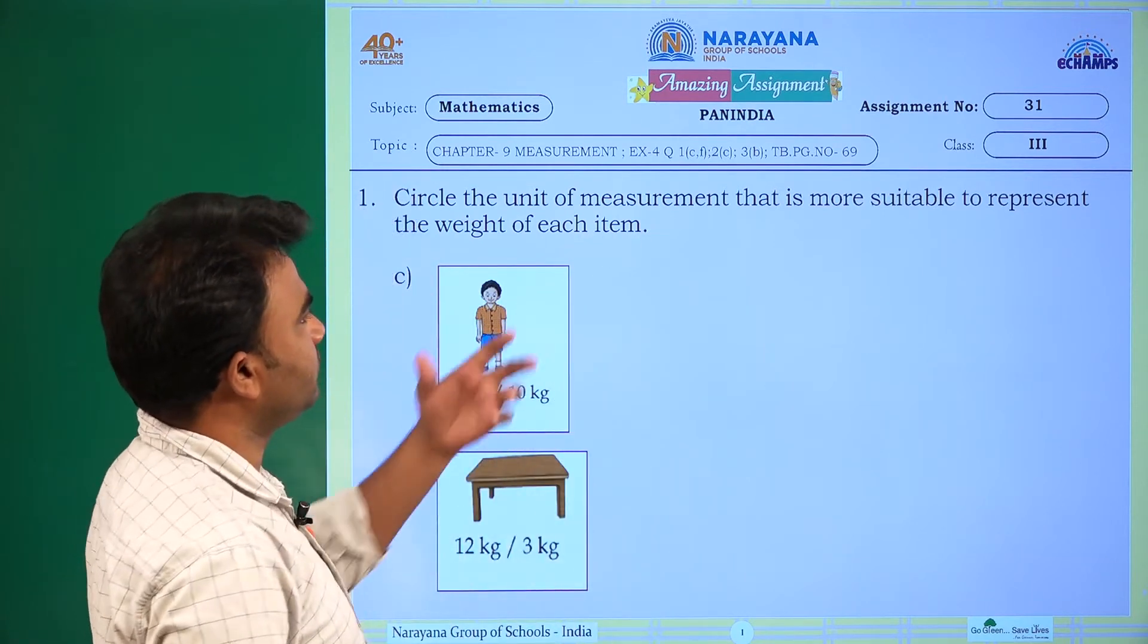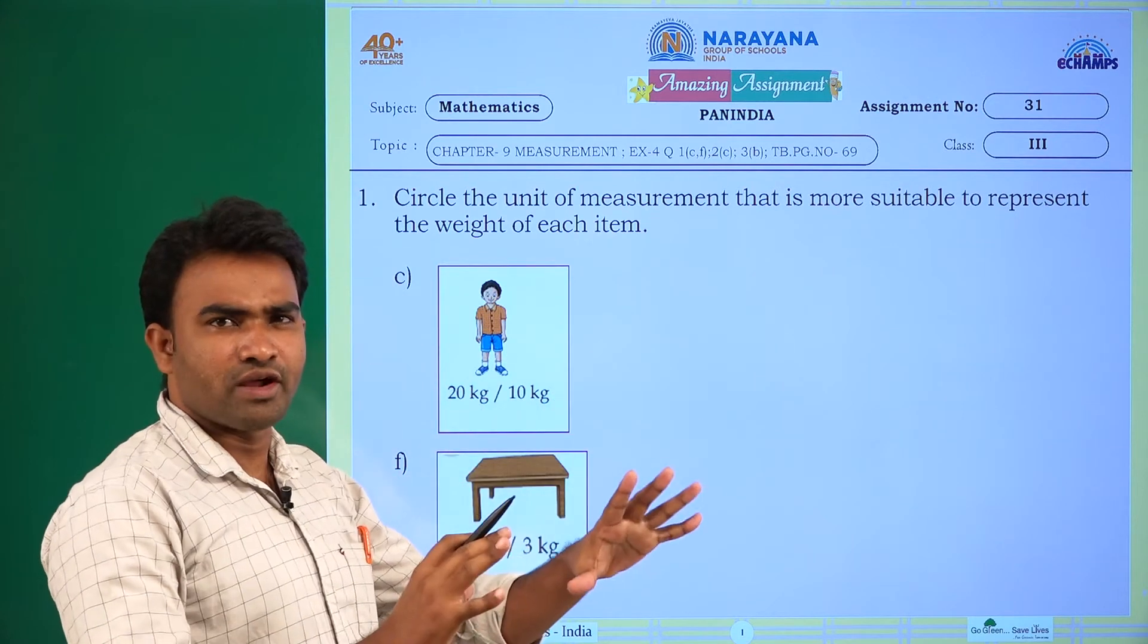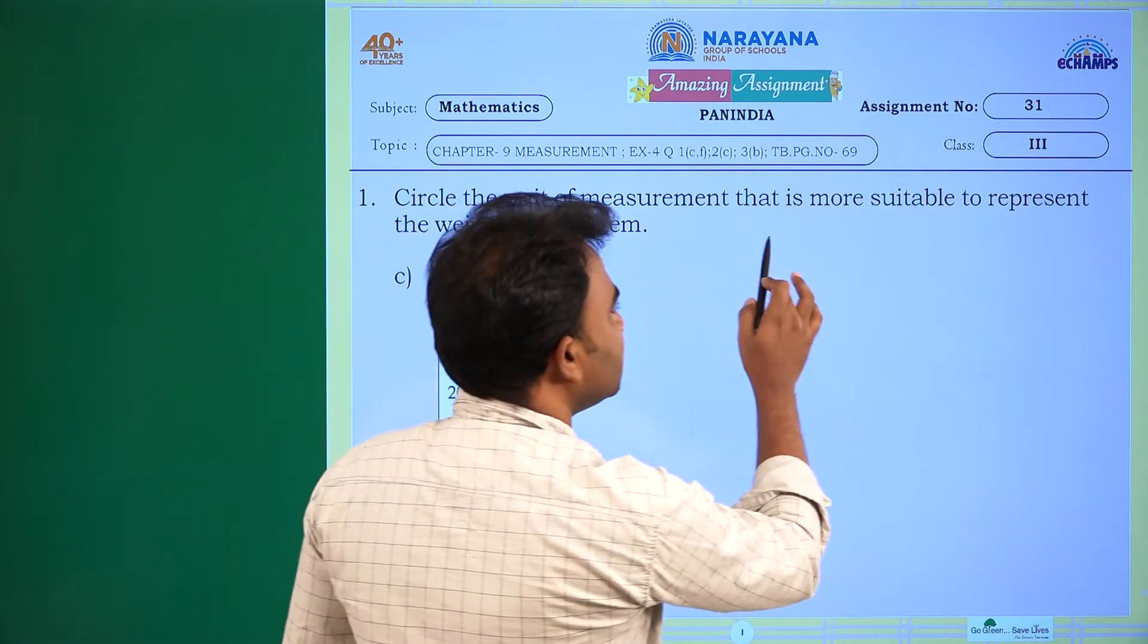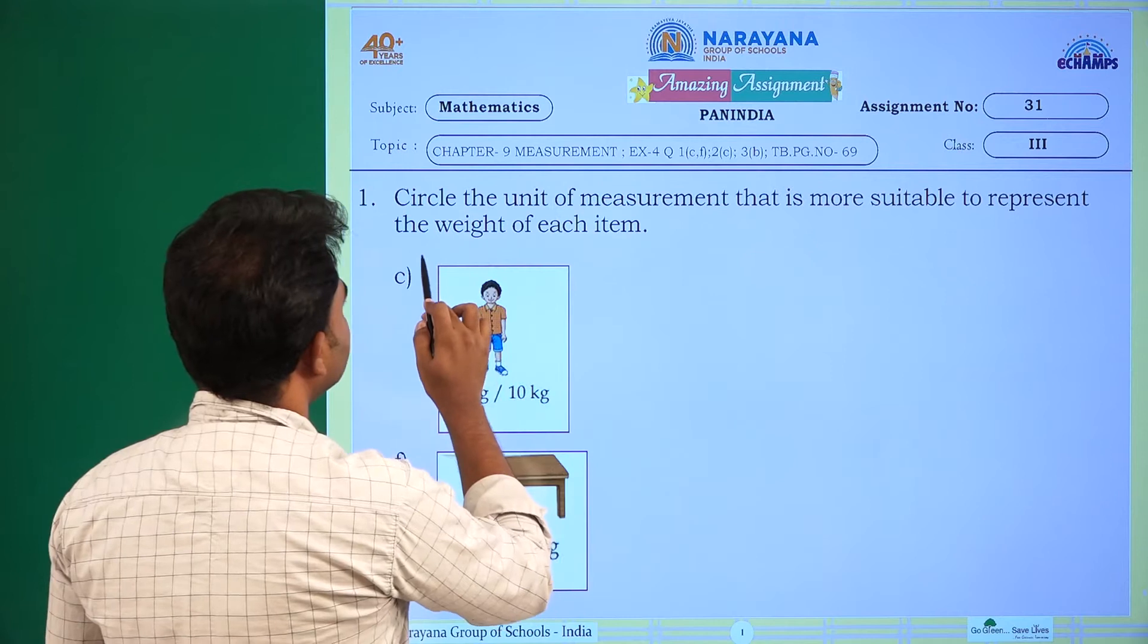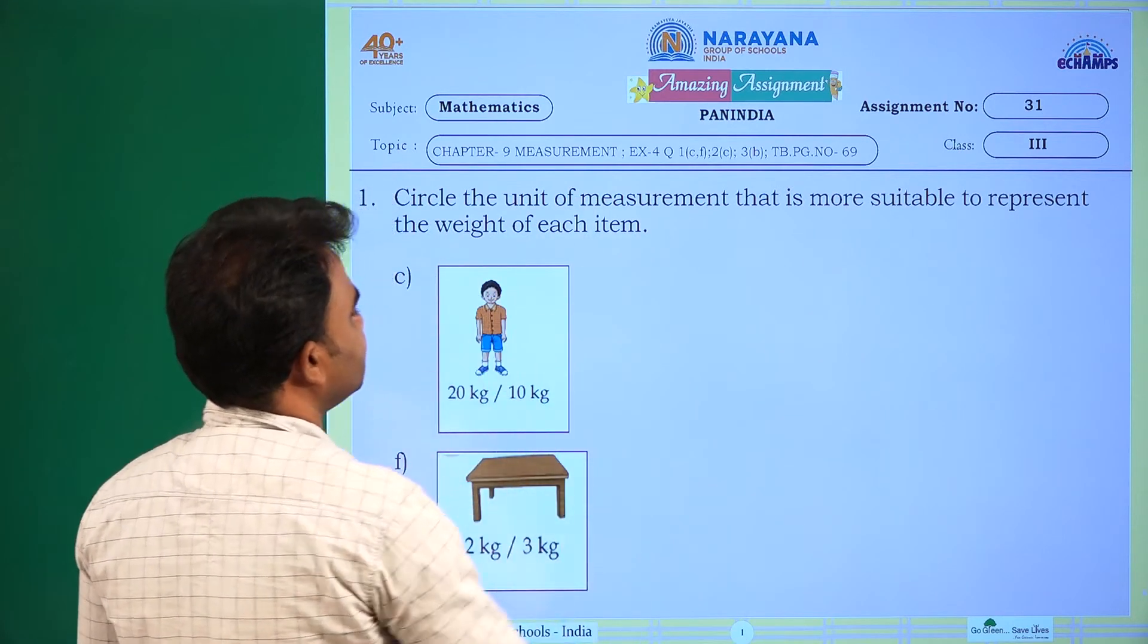Question 1, C and F, 2C and 3B sums. Let us have a look at our amazing assignment today. First one, circle the unit of measurement that is more suitable to represent the weight of each item.